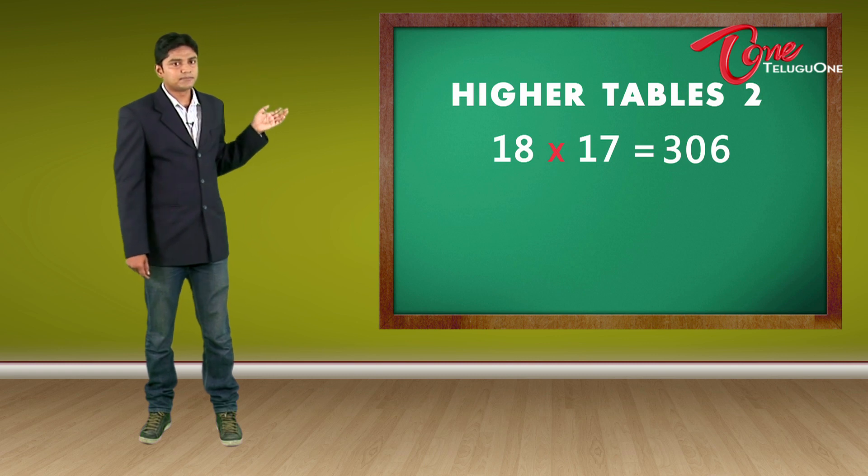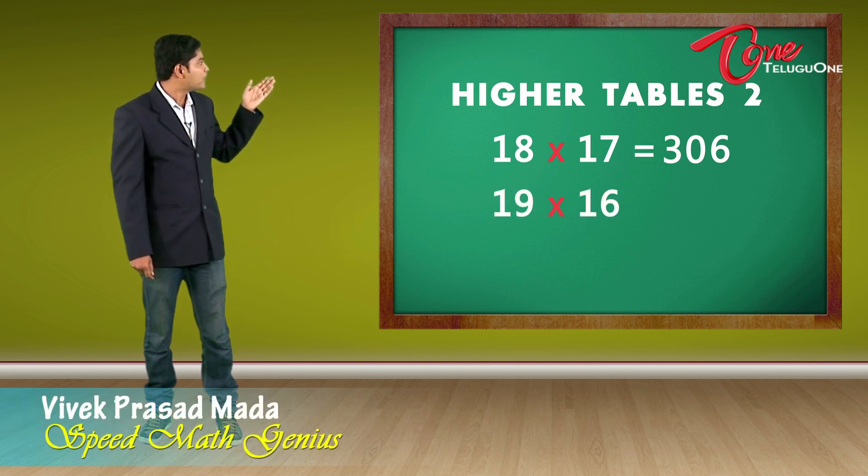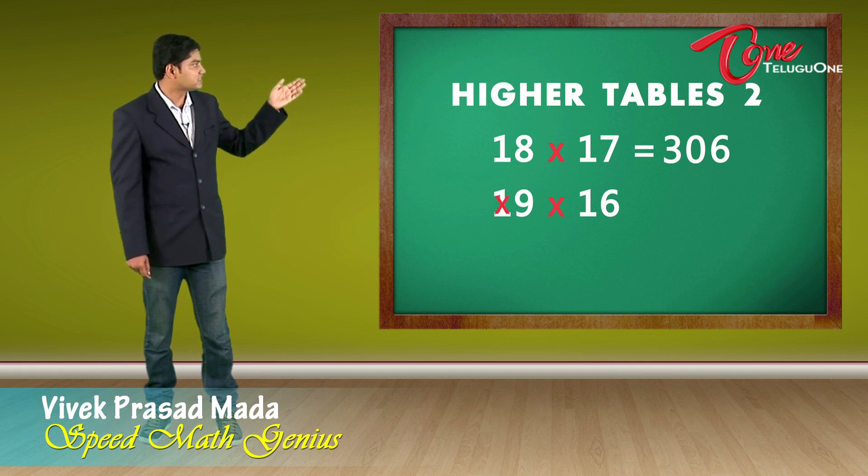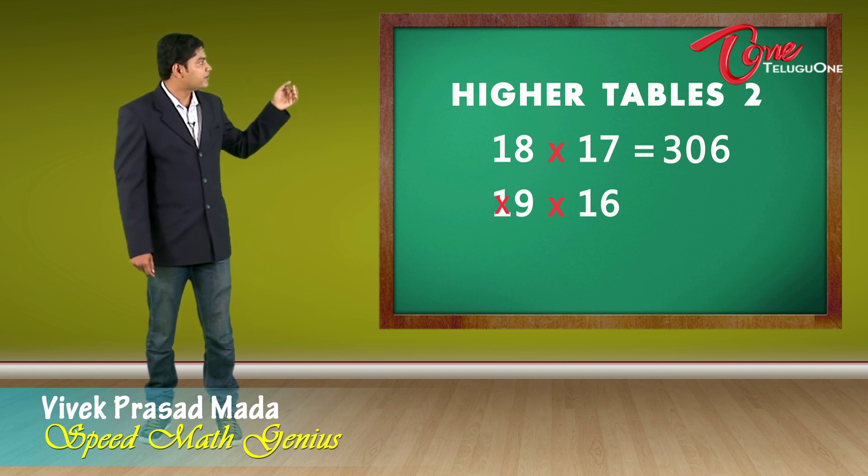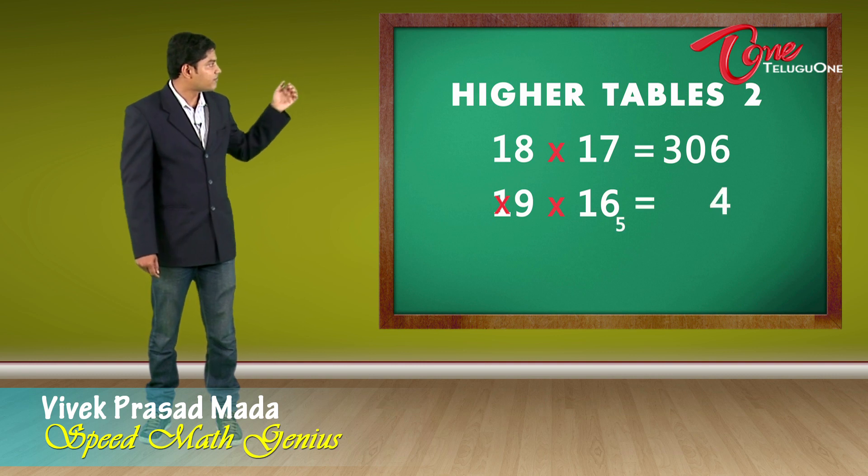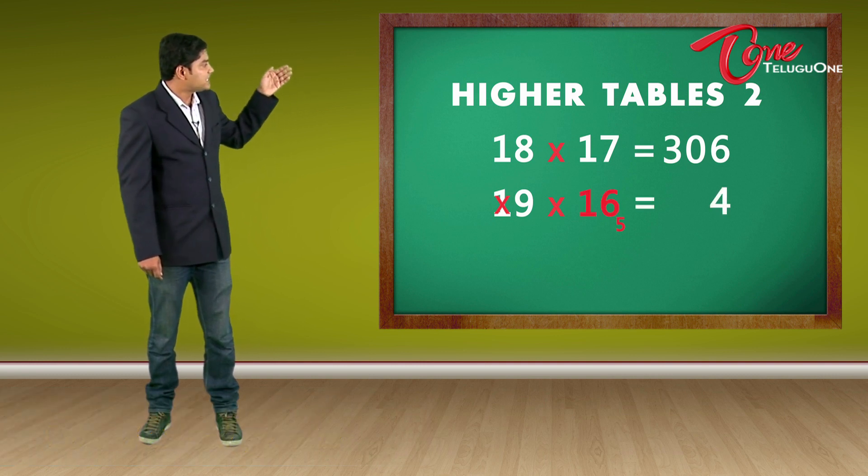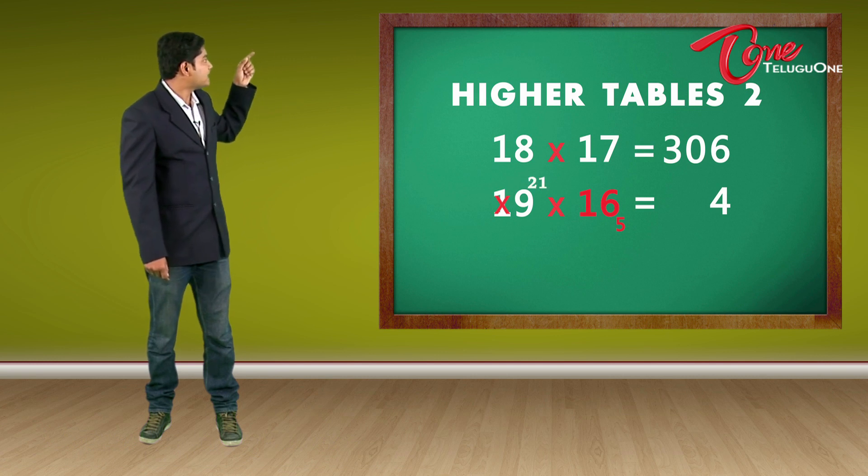Let us take another example. 19 times 16. So I am not going to use the 1 and I am going to multiply 9 times 6. 9 times 6 is 54. 5 and 4, 54. So 16 plus 5 is 21. Write the 21 about 9. And 21 plus 9 is 30.